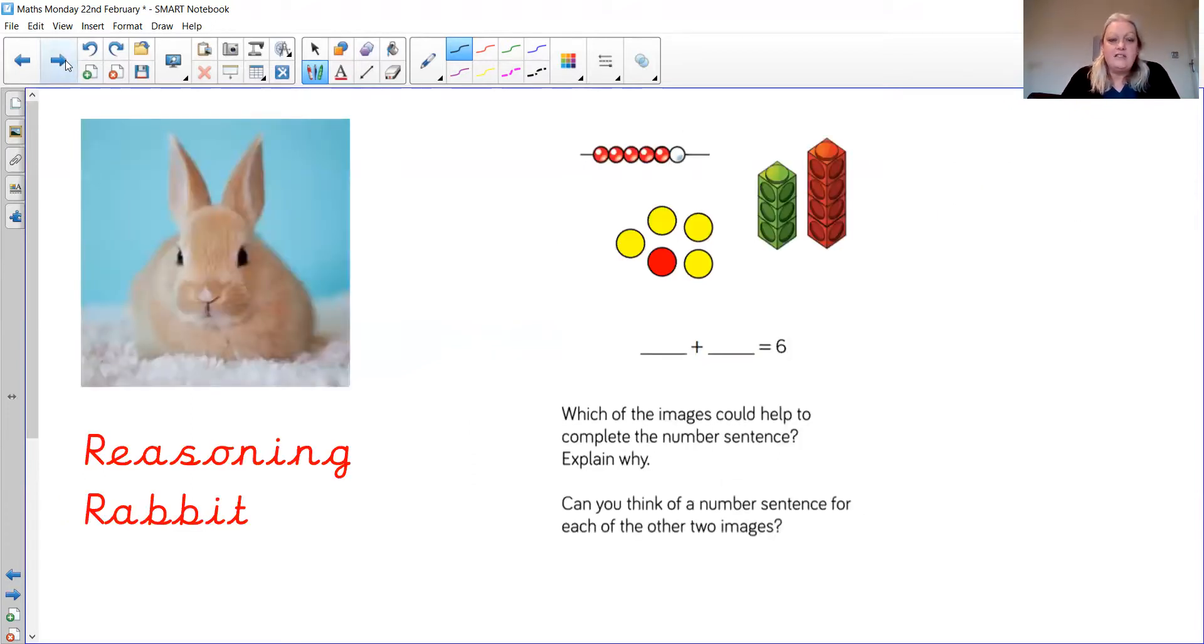We always love to end our lessons on a reasoning rabbit. So this is what we're going to do, this is a talking activity. It'd be really nice just to talk to your grownups, have a look what it's asking you to do because reasoning is all about speaking, telling your person, your grownup, why something's going on. And this one is asking you which of those images, which of those pictures can help us complete that addition calculation. And can you explain to your grownup which picture you've chosen and why you've chosen it? Could you come up with a number sentence to explain the pictures? Could you think of a number sentence for each of the other two images that you didn't choose?